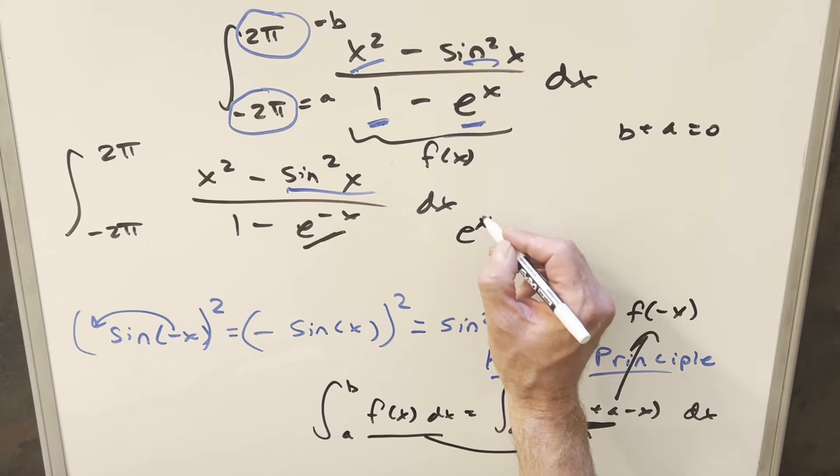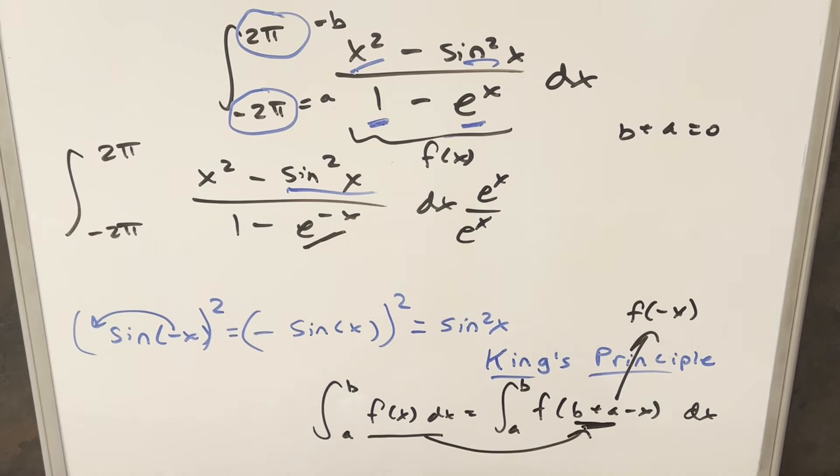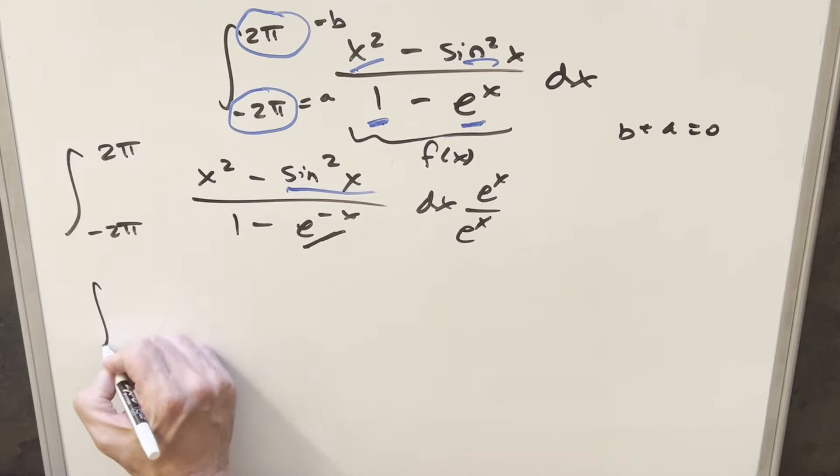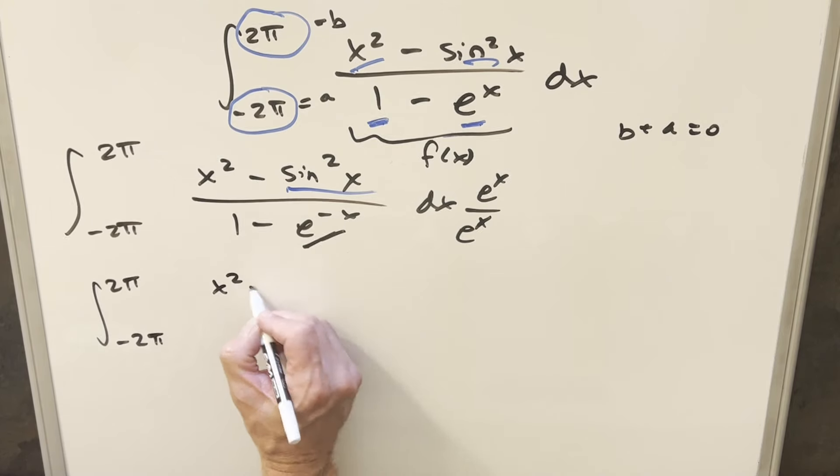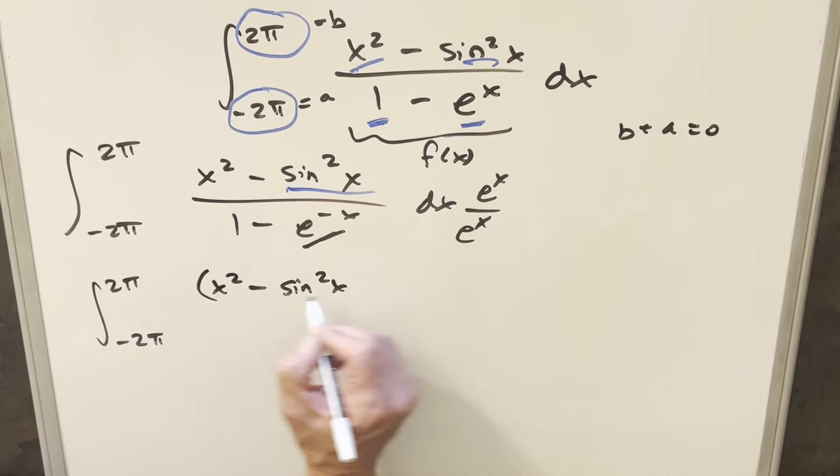And so we can kind of correct it by multiplying in e^x over e^x. So just going ahead with this, what's going to happen? I'm going to kind of leave it in the same form. I'll put parentheses forward as (x² - sin²x). We're multiplying in e^x in the numerator.